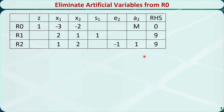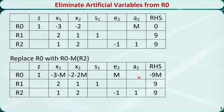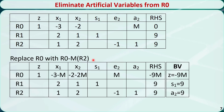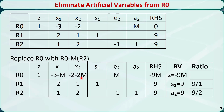This is the original tableau. The artificial variable has a coefficient M in row 0. Now let's subtract row 0 by M times row 2 — this term will be eliminated. Other coefficients and the right-hand side are also updated. In this tableau, s1 and a2 are basic variables and others are non-basic variables. Setting non-basic variables to 0: s1 is equal to 9, a2 is equal to 9, and z is equal to negative 9M. The entering variable will be x2 because it has the most negative coefficient in row 0. The ratios are the right-hand side divided by the coefficient of x2: 9 over 1 and 9 over 2. Row 2 has the smallest ratio, so it is the pivot row.